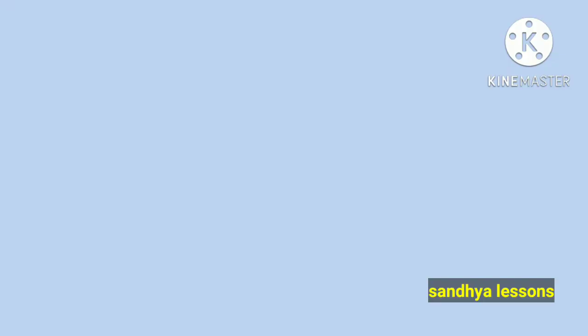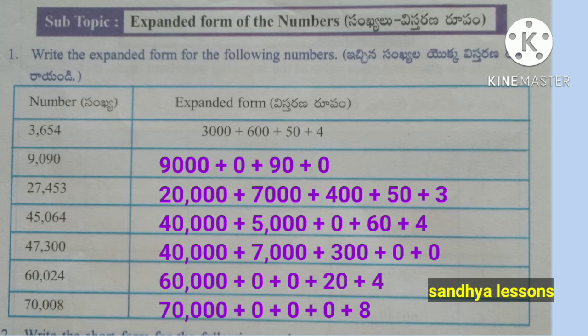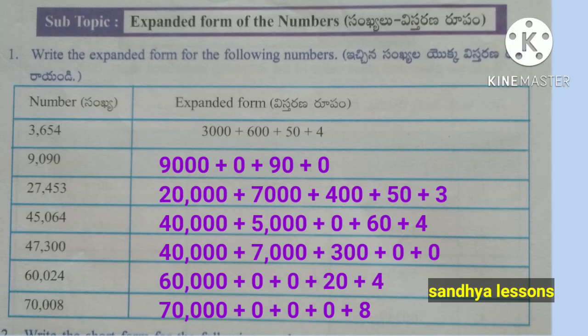Worksheet 7. First: Write the expanded form for the following numbers. Expanded form of 9,090 = 9,000 + 0 + 90 + 0. 27,453 = 20,000 + 7,000 + 400 + 50 + 3. 45,064 = 40,000 + 5,000 + 0 + 60 + 4. 47,300 = 40,000 + 7,000 + 300 + 0 + 0. 60,024 = 60,000 + 0 + 0 + 20 + 4. 70,008 = 70,000 + 0 + 0 + 0 + 8.